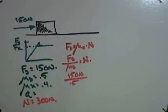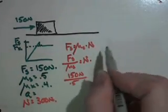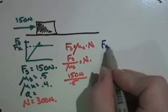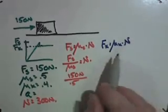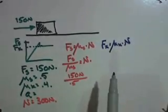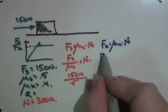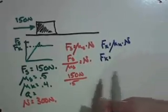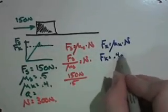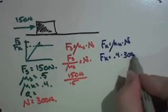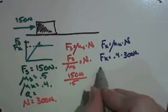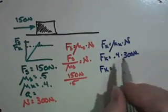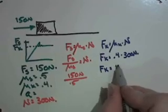150 newtons divided by 0.5 is going to give me a normal force equal to 300 newtons. Once I get it moving, I now only have to overcome kinetic friction. So the force of kinetic friction equals the coefficient of kinetic friction times the normal force. I've got my normal force, now it's coming in handy. So the force of kinetic friction is 0.4 times 300 newtons, which comes out to 120 newtons.